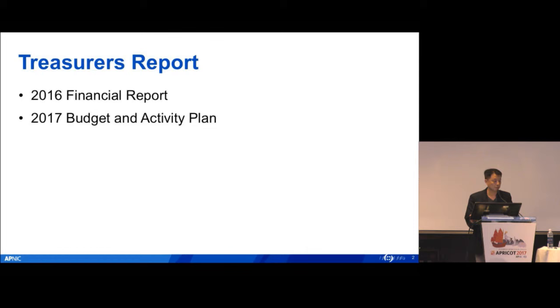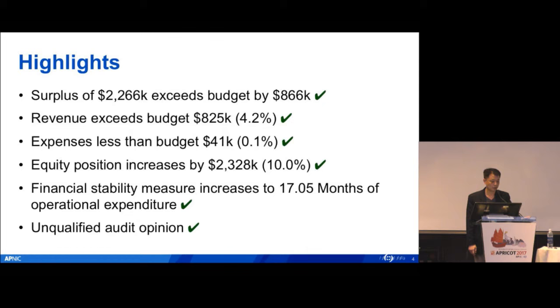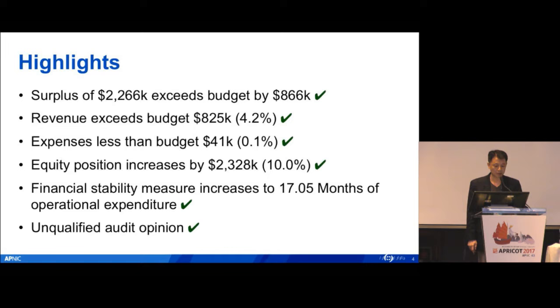The treasurer report was split into two parts. The first part is the year 2016 financial report. The second part is the 2017 budget and activity plan. Here is a summary of what happened last year: we surpassed 2.2 million, exceeding budget by 860,000 Australian dollars. All dollar figures I mention are Australian dollars.